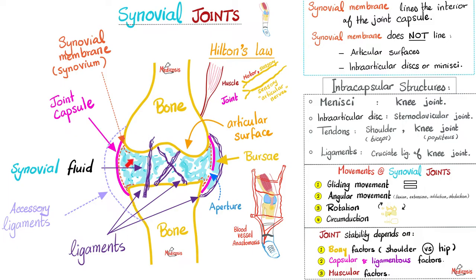What kinds of movement can happen in a synovial joint? Gliding movements back and forth. Angular movements such as flexion, extension, adduction, and abduction. Rotation — like rotating your neck to the right and left at the atlanto-axial joint, which is synovial. Circumduction — when you move your shoulder in all directions — is a combination of flexion, abduction, extension, and adduction.